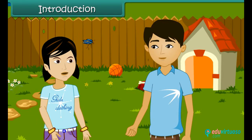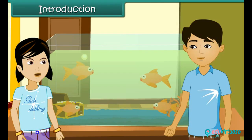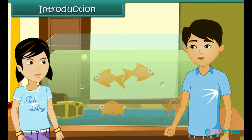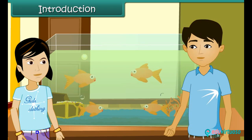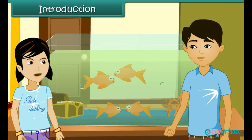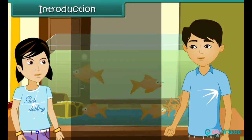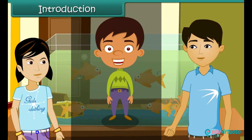Oh Girish, look at this butterfly, how does it fly? Yes Mona, how beautiful it is, it flies by flapping small wings. Girish, how do these fishes breathe in water? Yes Mona, I remember my teacher told in class that they have some special organs called gills. Do we also breathe by gills? No, we have other special organs. Come, let us learn more about these in the lesson: Animal Lifestyles.